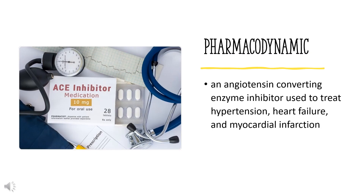Pharmacodynamics: Perindopril is a non-sulfhydryl prodrug that is metabolized via first-pass effect (62%) and systemic hydrolysis (38%) to perindoprilat, its active metabolite, following oral administration. Perindoprilat lowers blood pressure by antagonizing the effect of the RAAS. The RAAS is a homeostatic mechanism for regulating hemodynamics, water, and electrolyte balance.